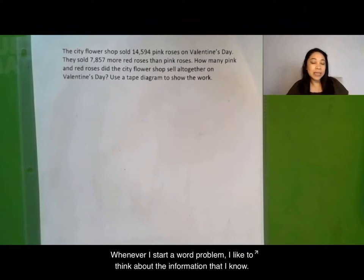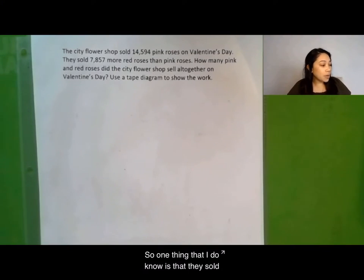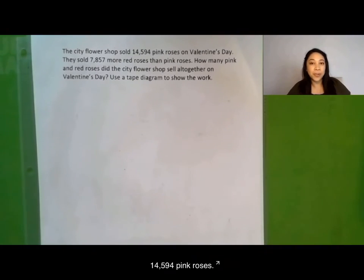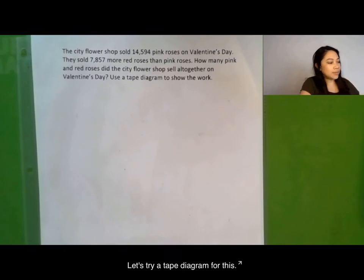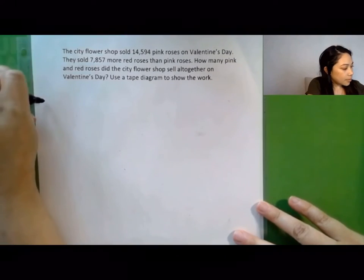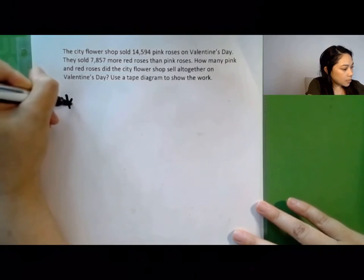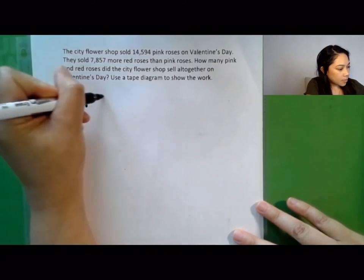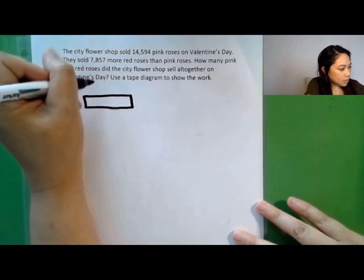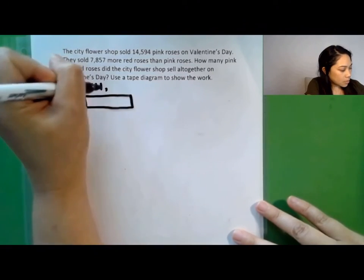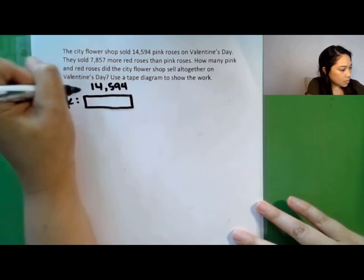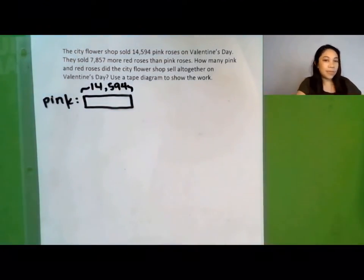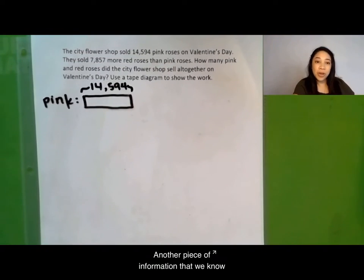Whenever I start a word problem I like to think about the information that I know. So one thing that I do know is that they sold 14,594 pink roses. Let's draw a tape diagram for this. Another piece of information that we know is that they sold more red roses than pink roses.